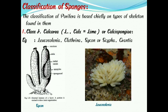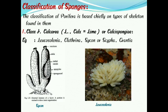The classification of sponges is based on the type of skeleton found in them. The first class is Calcarea, also called Calcispongiae. The word comes from Latin: 'calx' means lime or calcium. Examples include Leucosolenia, Clathrina, Sycon, and Grantia. The skeleton of Calcarea is formed of calcareous spicules, and the canal system is Ascon type, Leuconoid type, or Syconoid type.